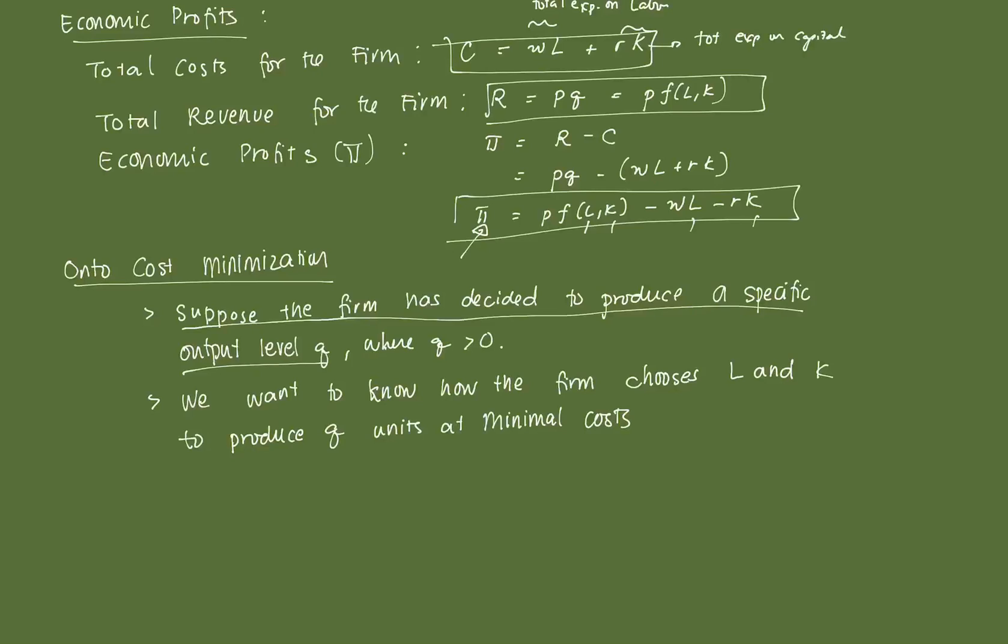Q is positive. And we want to know is how the firm will choose L and K to be able to produce Q at minimum cost. So, that's our goal.